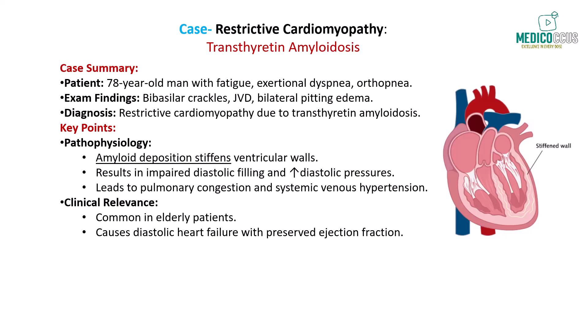Transthyretin amyloidosis, particularly common in the elderly, leads to restrictive cardiomyopathy by depositing insoluble amyloid proteins in the myocardium. This causes the ventricles to become non-compliant, resulting in diastolic heart failure with preserved ejection fraction.